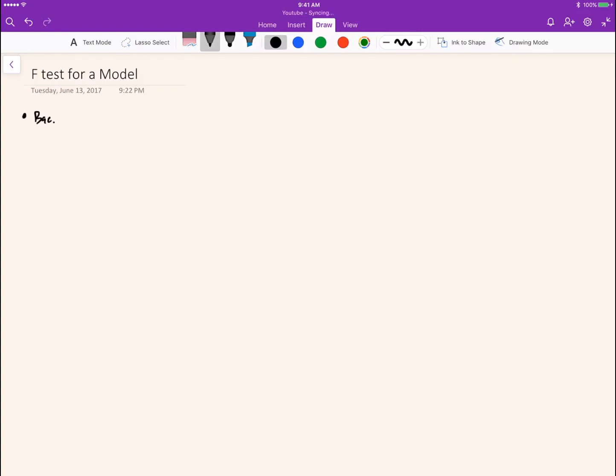A little bit of background, sums of squares total is equal to sums of squares regression plus sums of squares error. And this is a formula that I introduce in other videos.